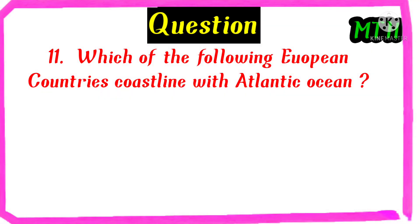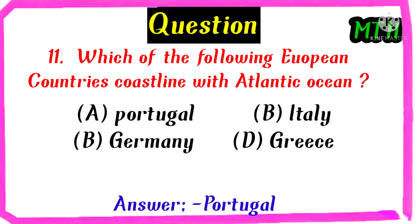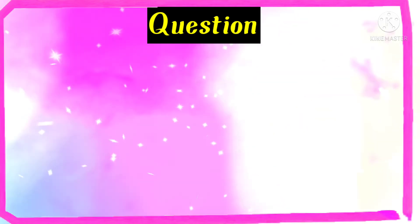Which of the following European countries has a coastline with the Atlantic Ocean? Portugal, Italy, Germany, Greece. The right answer is Portugal.